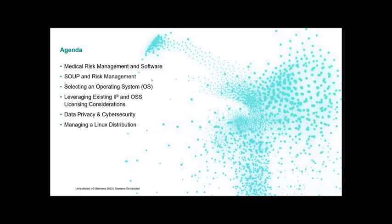We'll start by talking about what the medical industry considers to be risk management and software. We'll talk about a concept called SOUP, which I'll go into some detail. Then we'll talk about what that means when you're selecting an operating system, and then go into licensing, data privacy, cybersecurity, and managing a Linux distribution. Hopefully at the end you'll have a better understanding of what it means to use open source software in a medical device.